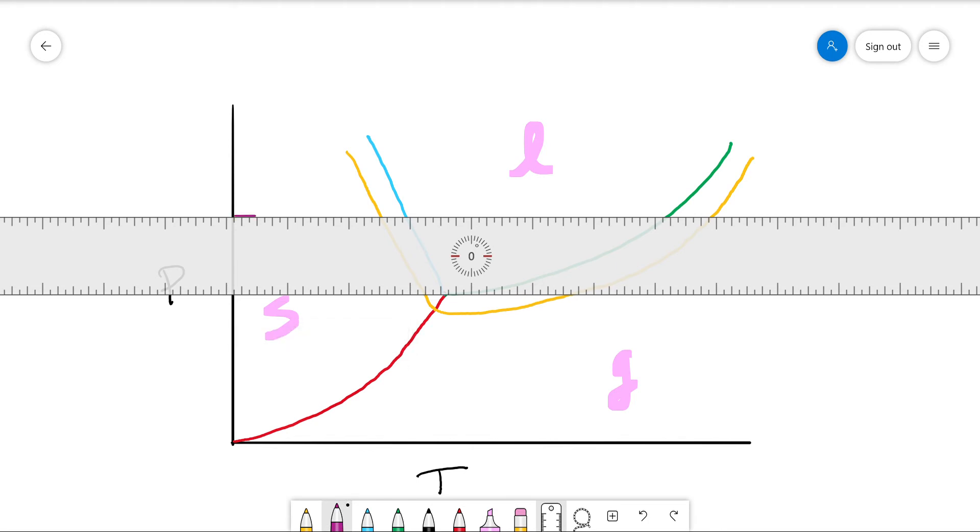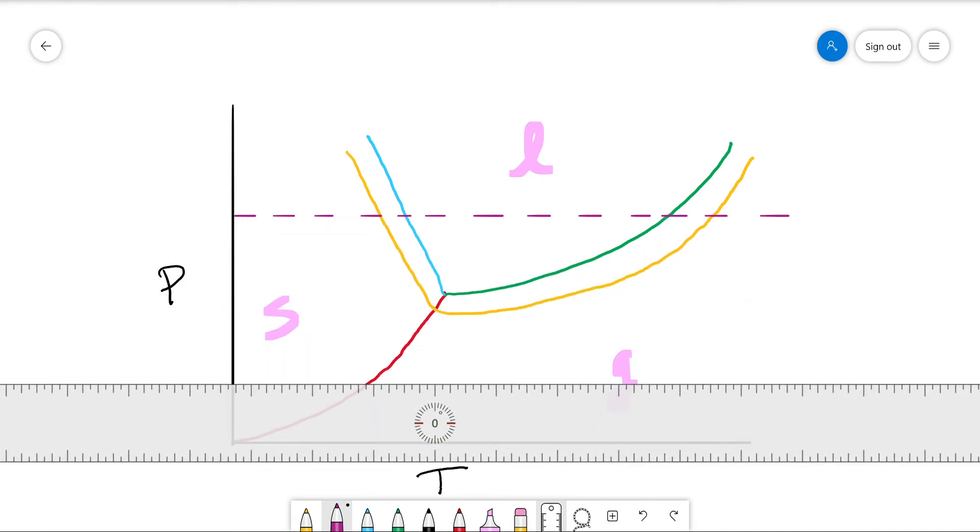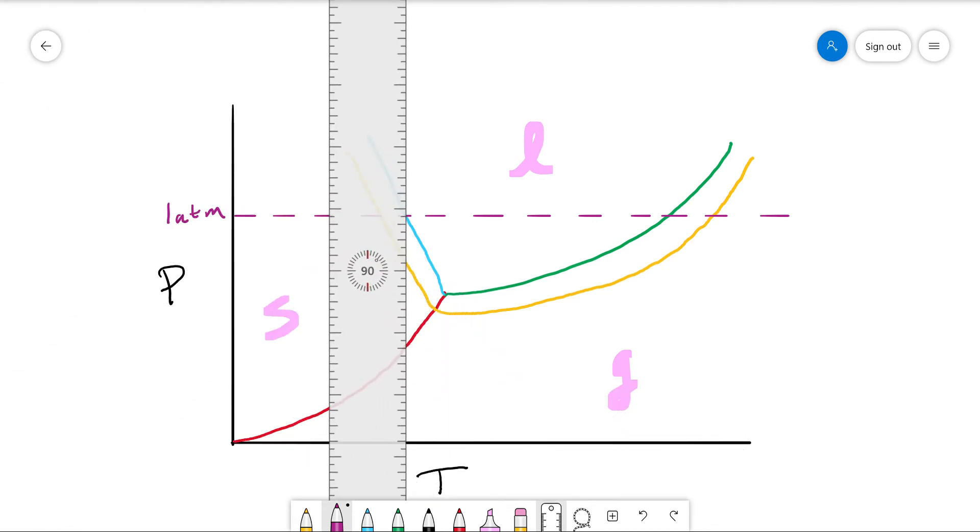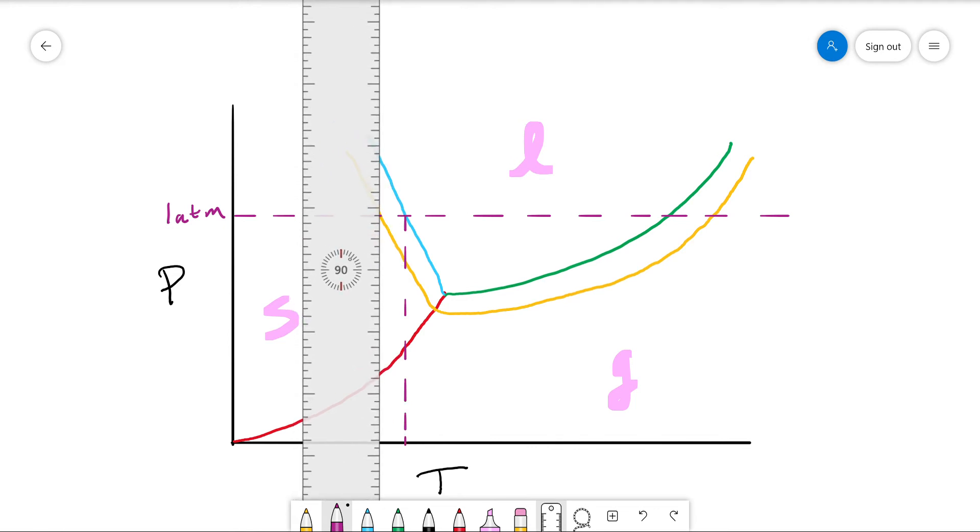Let's just say this is one atmosphere here. So if we have one atmosphere there, this temperature here should be our normal freezing point. But look, our new phase diagram, our new line liquid-solid line gives us a different temperature here.